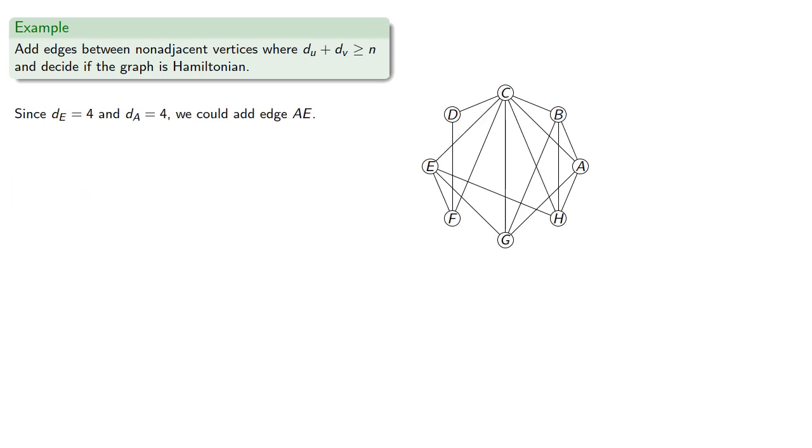Since the degree of E is 4 and the degree of A is also 4, their sum is at least as great as the number of vertices, so we could add edge AE. With the added edge we could find a Hamilton cycle more easily.